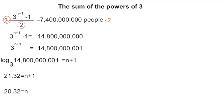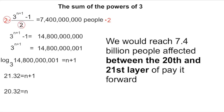So that tells us that we would reach 7.4 billion people between the 20th and 21st layer, which is pretty crazy. That seems pretty quick to me.